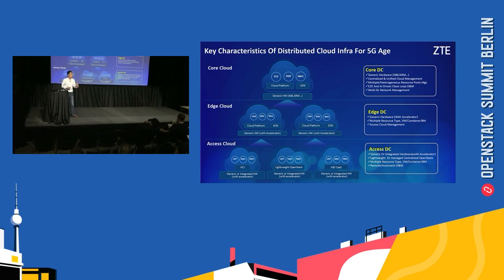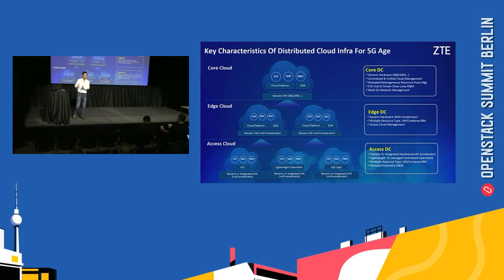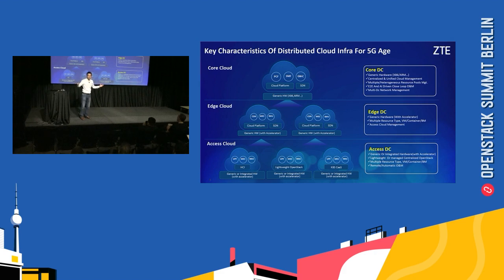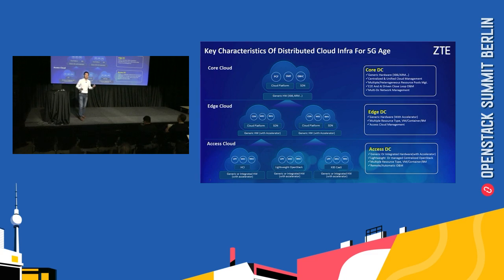In edge data centers, not only do you have common hardware and accelerators, but also different kinds of hardware — integrated hardware, all-in-one nodes, multi-node hardware — to fit the limitations of edge and access data centers. From an OpenStack perspective, at edge or access sites you don't need a full OpenStack installation. You want a lightweight OpenStack to save CPU cores, memory, and disk space — deploying everything on demand.